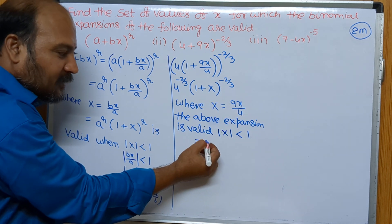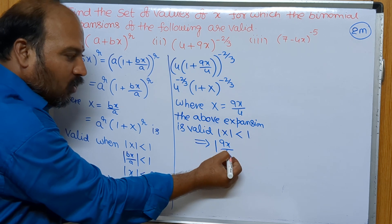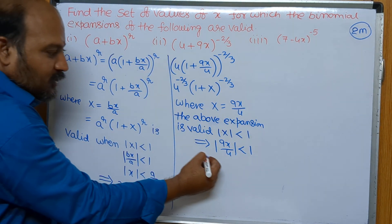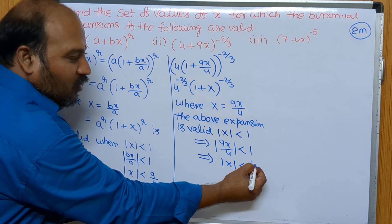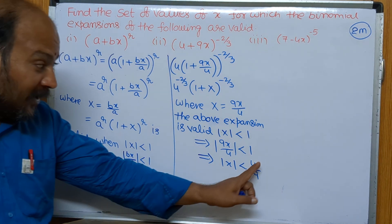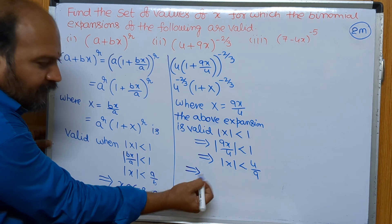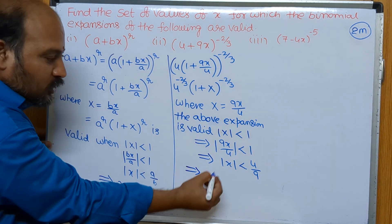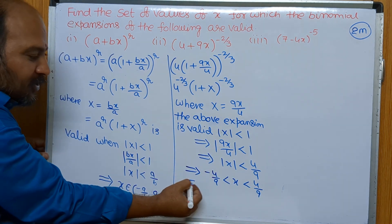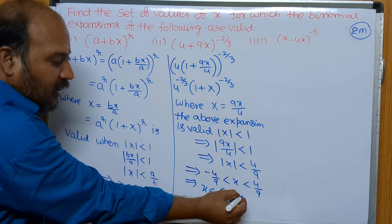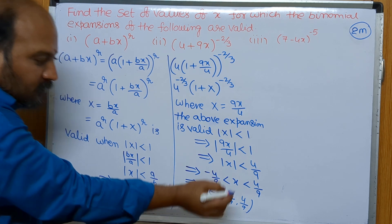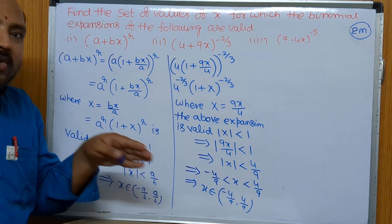In place of X, what we have to replace — that implies mod(9x/4) is less than 1, except x the remaining numerals we are bringing to this side. So mod x is less than 4/9. Whenever you are removing modulus, plus or minus comes, so minus 4/9 is less than x is less than 4/9. That can be written as x belongs to the open interval (−4/9, 4/9).